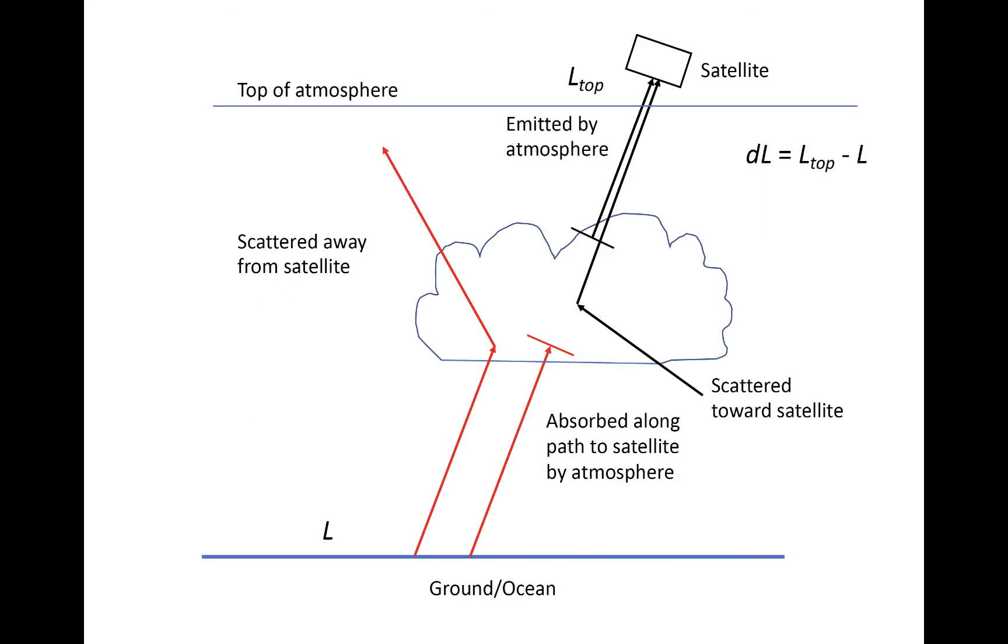Let's return to our idealized atmosphere from a couple of modules prior. The radiance observed at the satellite is whatever comes from the surface plus the sources along the path to the satellite caused by emission and scattering minus the sinks caused by absorption and scattering.